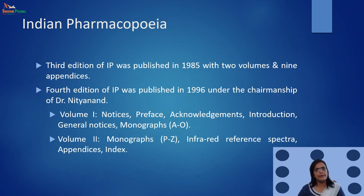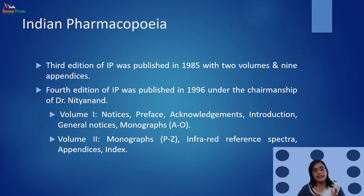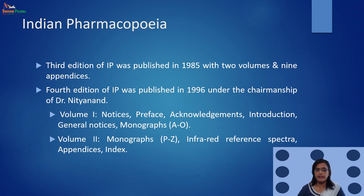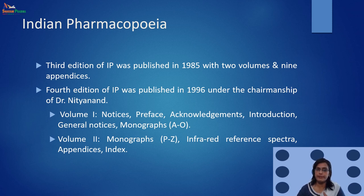IP has several editions and volumes. The third edition, introduced in 1985, came with two volumes and nine appendices. The fourth volume of IP was in 1996, under the chairmanship of Dr. Nithyanan. Volume 1 contains notices, preface, acknowledgement, introduction, general notices, and monographs from alphabet A to O. The second volume covers alphabets P to Z.